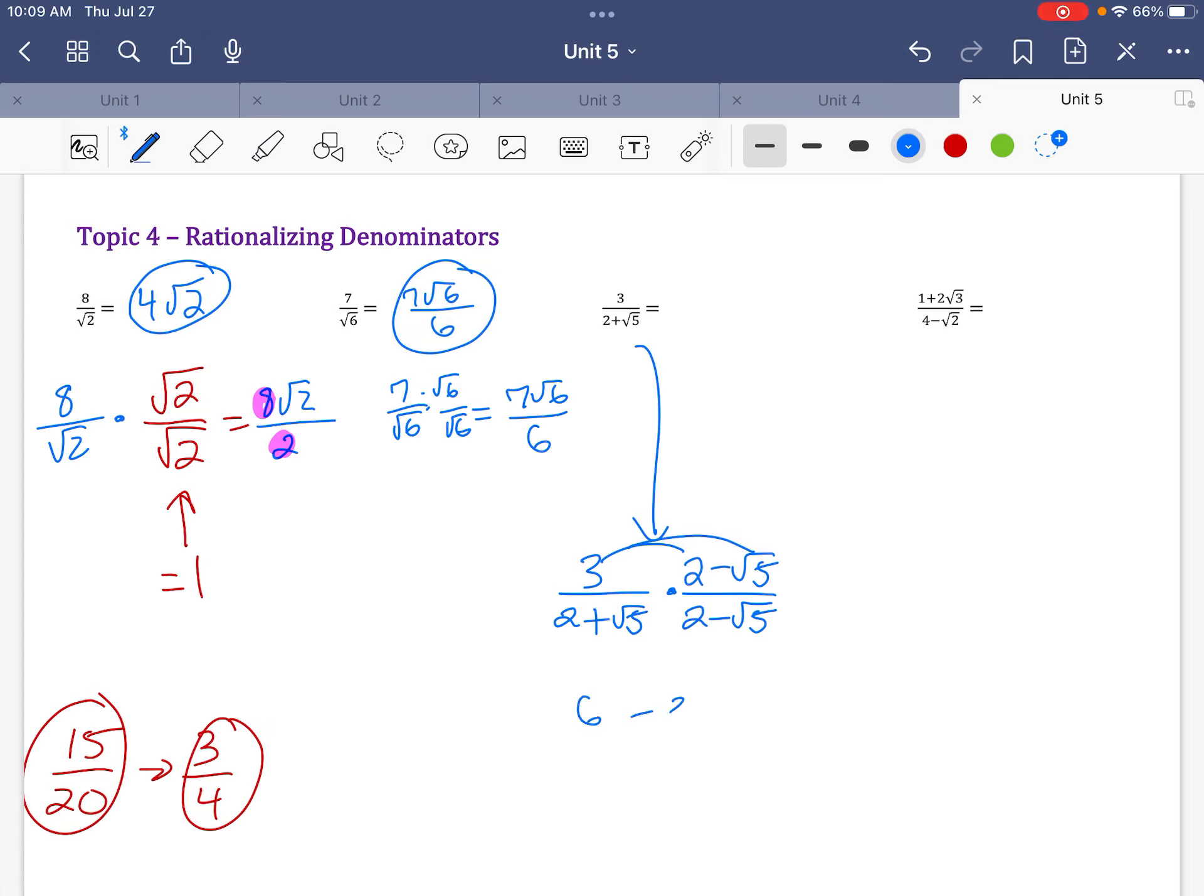So the top is going to be a distributive property. So it's going to be 6 minus 3 radical 5. Again, I'm not worried about the top having a radical, the numerator having a radical. But look at what happens to the bottom. 2 times 2 is 4. 2 times here is minus 2 radical 5. This will be plus 2 radical 5. Those are going to cancel. And I'm going to do radical 5 times radical 5, and the 5 is going to pop out.